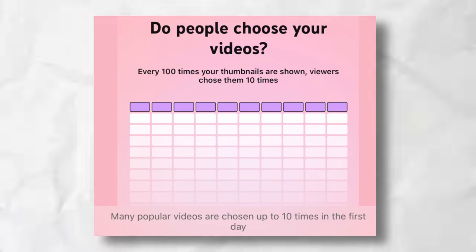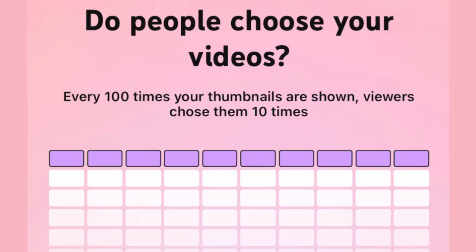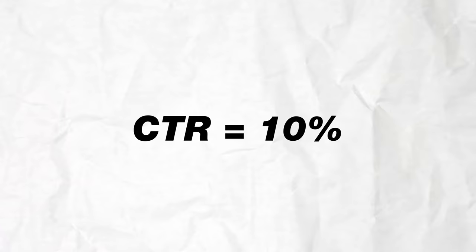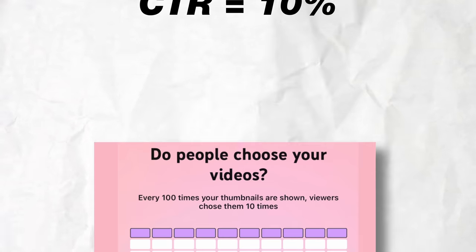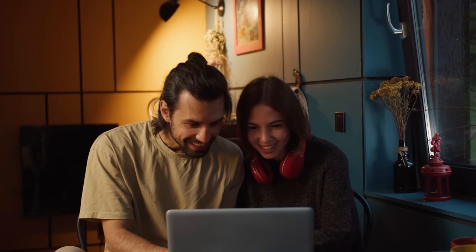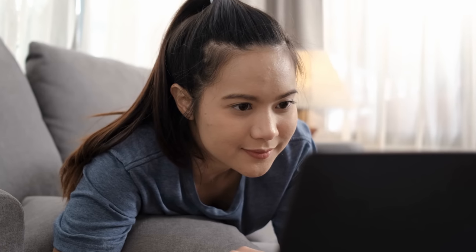On the next slide, it says 'do people choose your videos?' Right here it says every 100 times that your thumbnails are shown, viewers choose them 10 times. Basically, what this means is that my videos typically have a 10% click-through rate, and it's letting me know that many popular videos have a 10% click-through rate in the first day. This is important to know because in that first day, a lot of your subscribers are going to see your video and it might not reach a whole new audience yet. So do your subscribers, when they see your videos, find it related enough to your previous topics and interesting enough that 10 out of 100 of them are going to click on it?